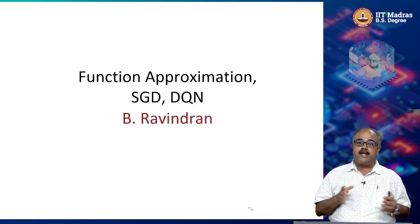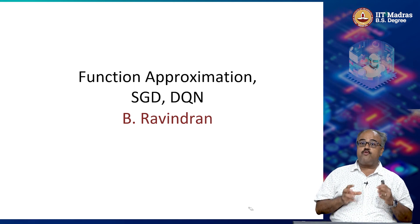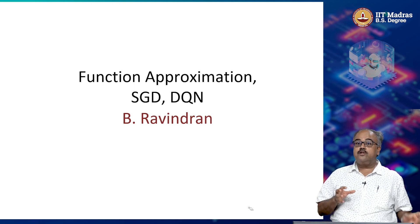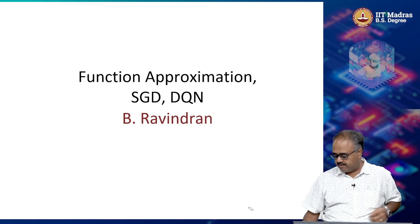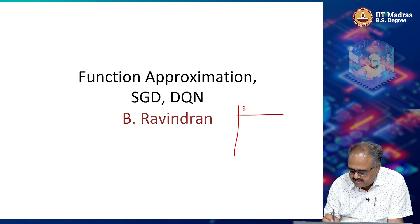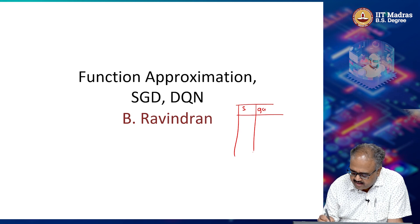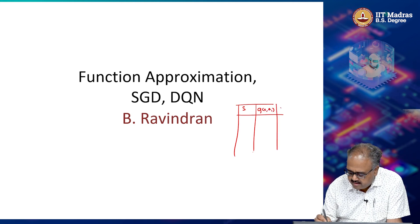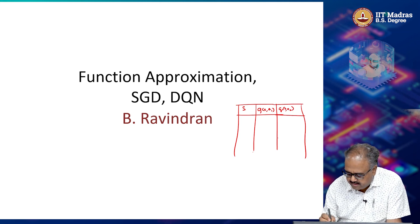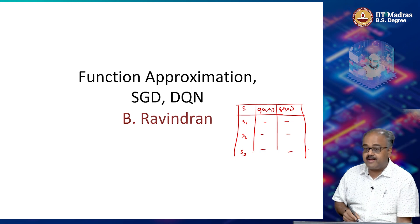So far, we have been looking at different learning algorithms where the Q function is stored as a lookup table. What we mean by that is that for every state s, I will have a table, and then for every state s, I will have Q(s, a1), Q(s, a2), and so on. For s1, s2, s3, I will have entries. This is essentially what we mean by a lookup table.